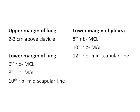Regarding the upper and lower margins of the lung: the upper margin is about 2 centimeters above the clavicle. The lower margin of the lung corresponds to the 6th rib in the mid-clavicular line, the 8th rib in the mid-axillary line, and the 10th rib in the mid-scapular line.